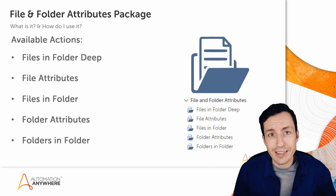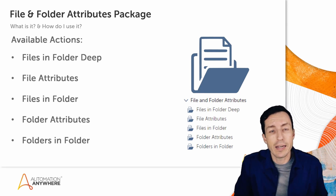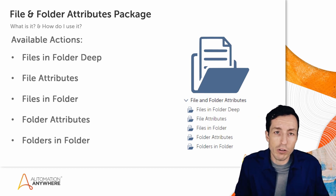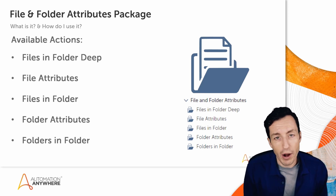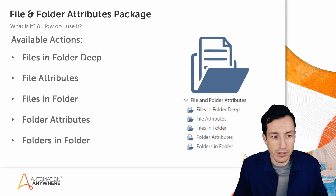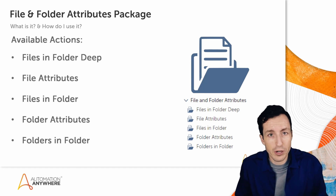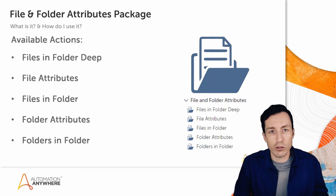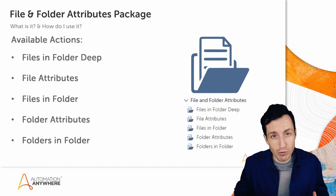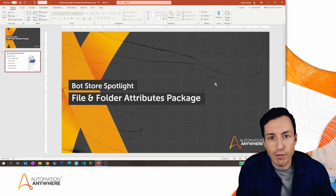Files in Folder shows a list of all files within a folder. You can do some cool sorting with that — sort by name, by date, or by file size, both ascending and descending. Folder Attributes shows the attributes of a folder: how many files are in it, how many files are in all subdirectories, the size, when it was last modified, and who's the owner. Folders in Folder shows a list of all folders within that folder, useful for recursive looping through child folders.